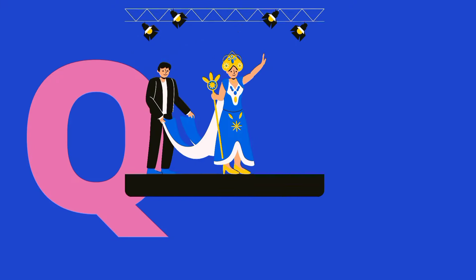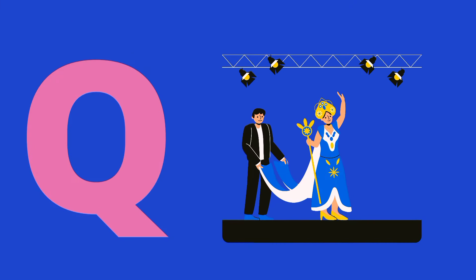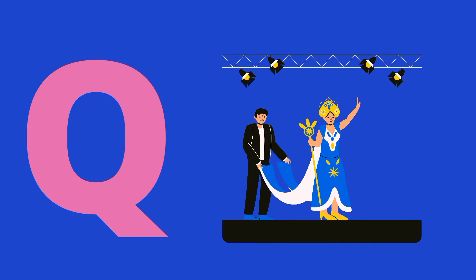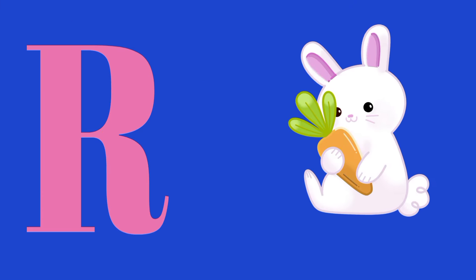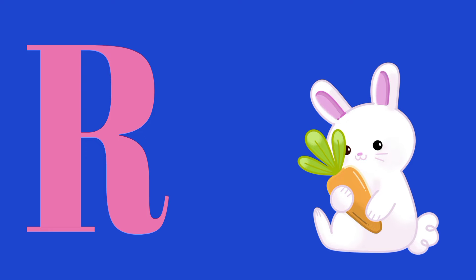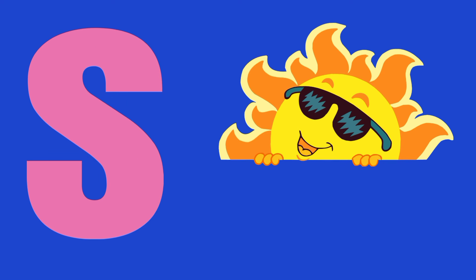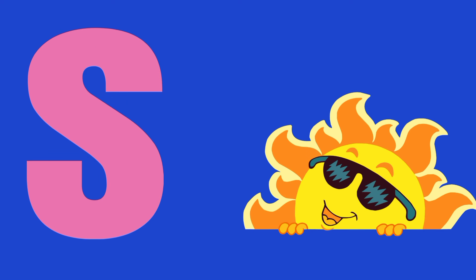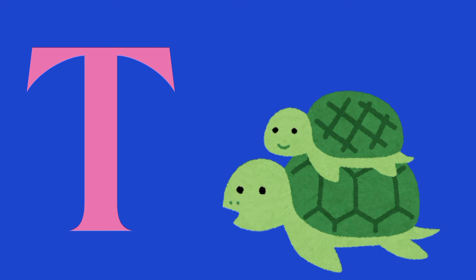Q is for Queen, Q-Q-Queen. R is for Rabbit, R-R-Rabbit. S is for Sun, S-S-Sun. T is for Toad, T-T-Toad.